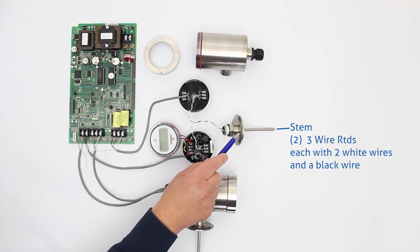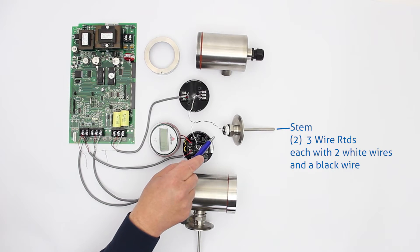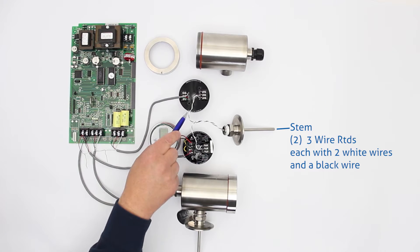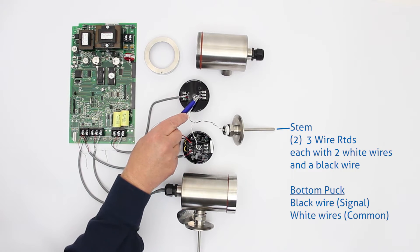So to start off with we're going to look at the SA stem. The SA stem contains two three-wire RTDs. Each one has two white wires and a black wire. The black wire will be the signal wire and the white wires are the commons.